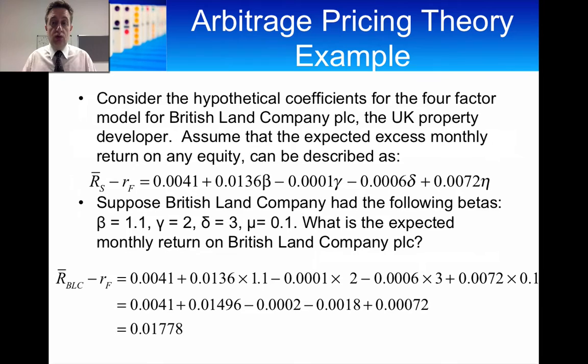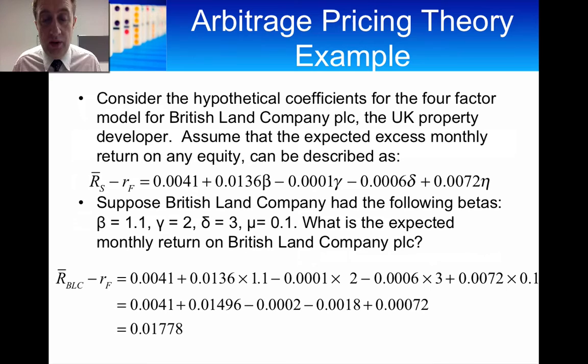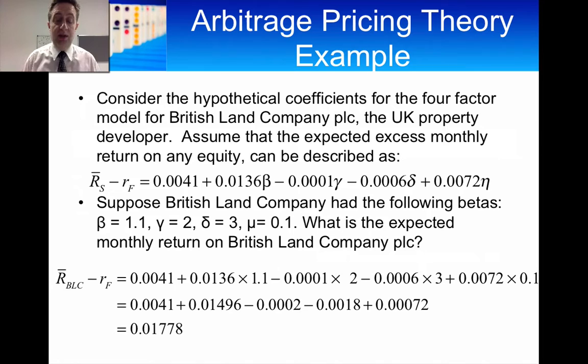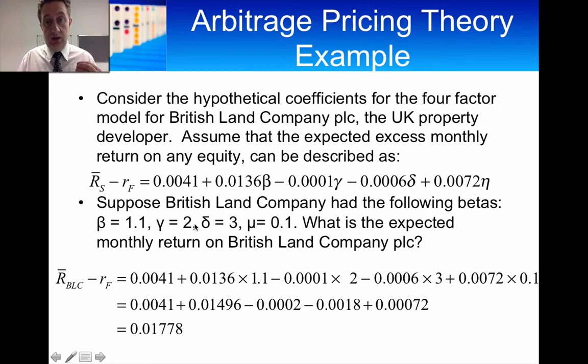Let me take you through a quick example in arbitrage pricing theory from the book, using a company called British Land Company. Assume we have four factors — the exposure of British Land Company to each factor is given by beta, gamma, delta, and mu. The beta of British Land Company with respect to the first factor is 1.1, the sensitivity to the second factor is 2, delta equals 3 for the third factor, and mu equals 0.1 for the fourth factor.